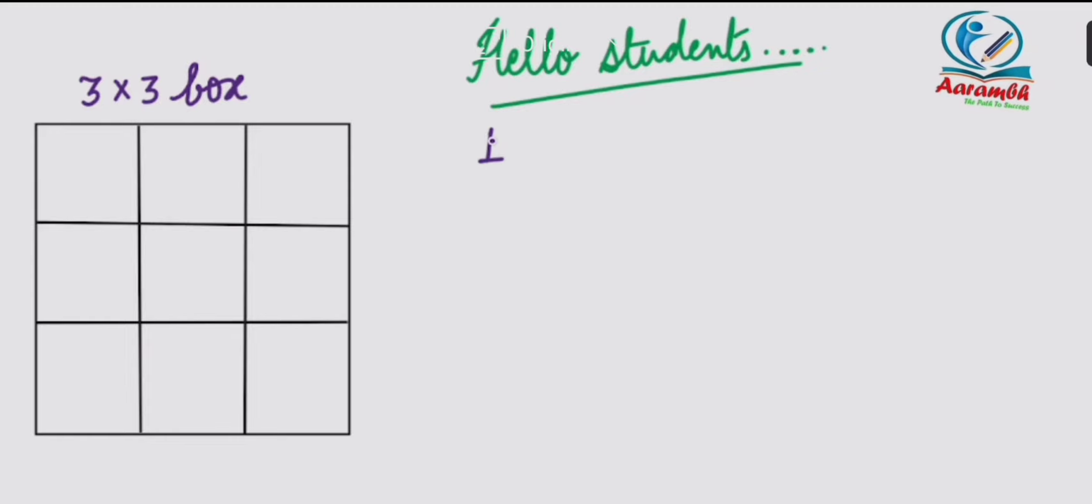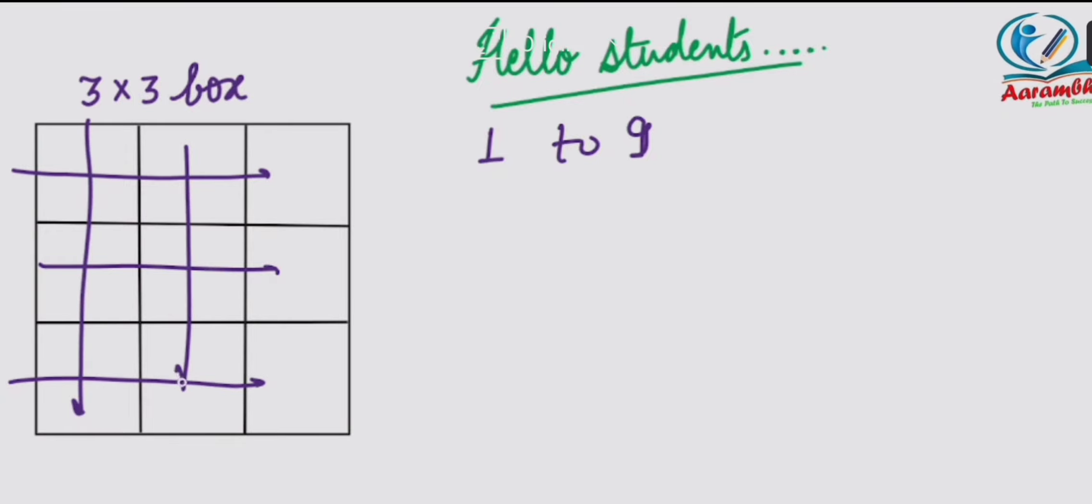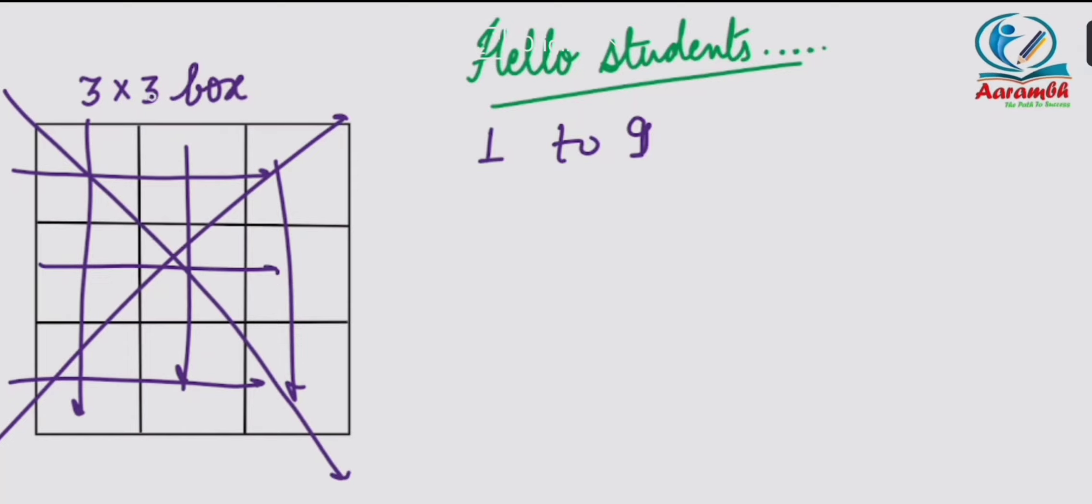For example, if I fill in 1 to 9 numbers, because only 9 boxes are there, I will fill in this box in this way. I will add in any direction - horizontally, vertically, or diagonally - and the result will be the same in every case.